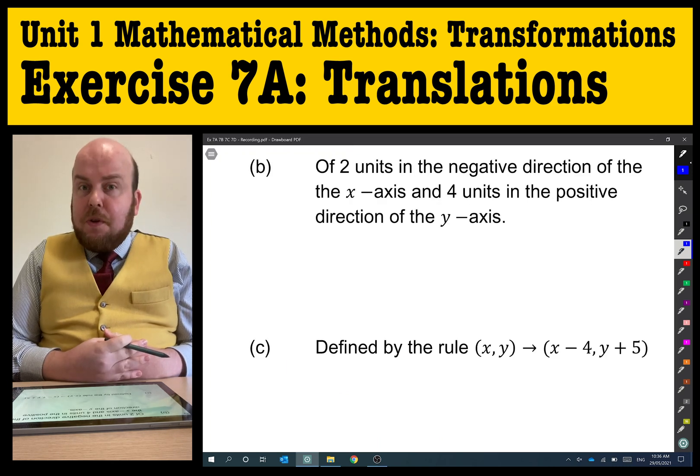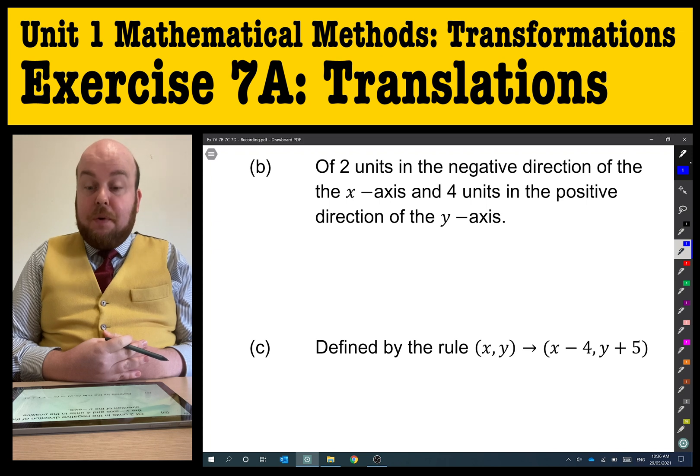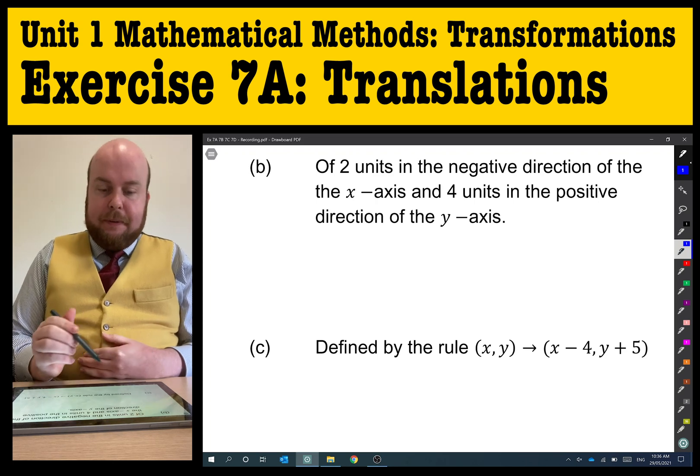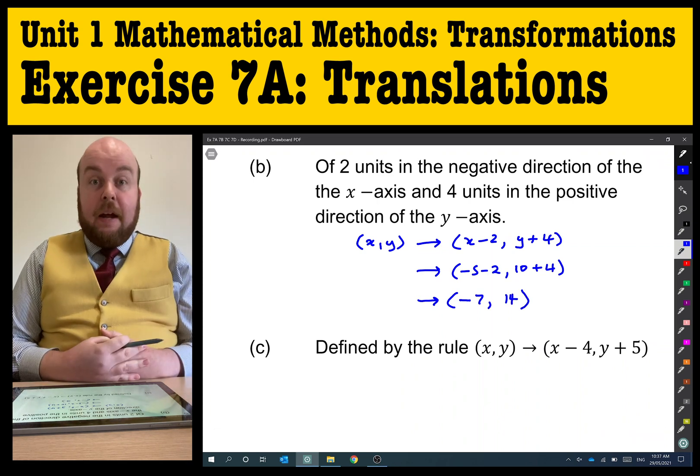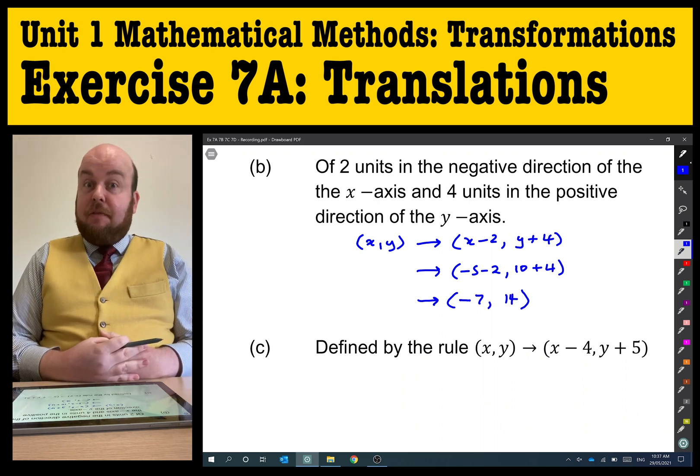Part B: two units in the negative direction of the x-axis and four units in the positive direction of the y-axis. I'm going to apply the same method as I did before. Our final coordinates are (-7,14).